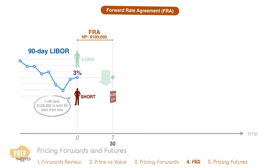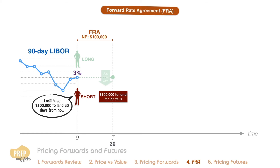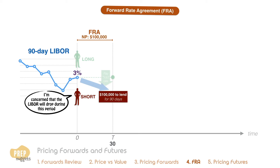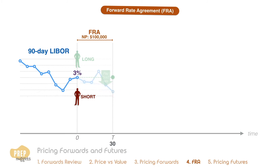For example, Red anticipates that he'll receive $100,000 in 30 days and is concerned that the interest rate may fall in the next 30 days. He locks in the current rate by taking the short position against Green. By entering the FRA, changes in the future rate will not affect him.